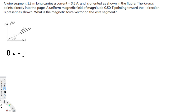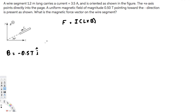Since B is in the i-direction, we are not going to have a force in the i-direction, because to find the force we use F = IL × B. If you cross i with another i, you get zero. So we will have force components in the y and z directions.